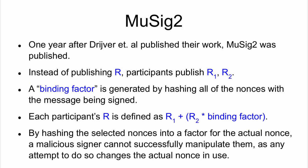This led to MuSig2. One year after Driver et al. published their work, MuSig2 was published. Instead of sharing a single nonce, they published two nonces R1 and R2, and there's now a binding factor — we hash all of the nonces with the message being signed. The nonce is calculated as R1 plus R2 times the binding factor. By hashing the selected nonces into a factor for the actual nonce, a malicious signer can't manipulate them. If you change the nonce, you change what it hashes to and change the actual value being used, and suddenly you have to redo your calculations and you can't beat that cycle.